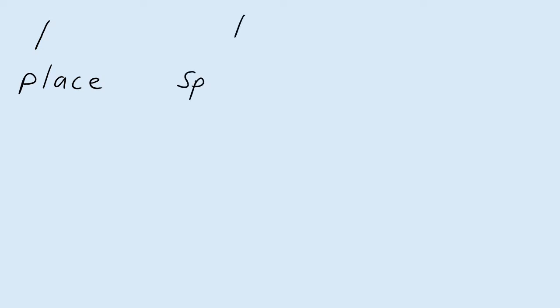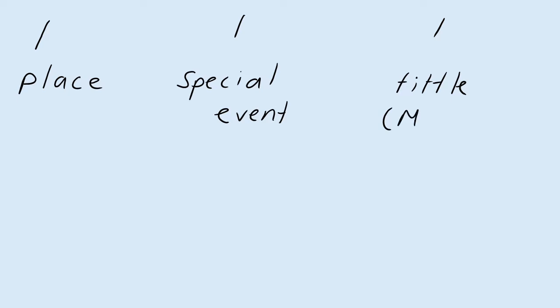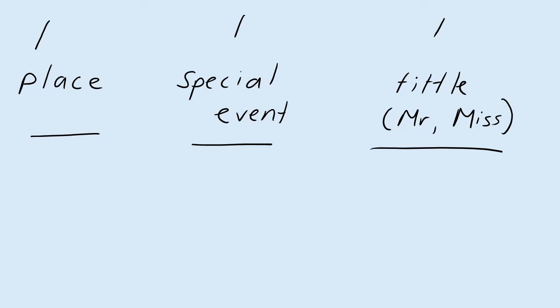Alright, let's go to the next slide. I'd like you to try your own sentence. Pick one place — geographical location — one special event, and one title, like Mr. or Miss. Include these three different types of capitalisation in one sentence. Pause this video and give it a go. Your teacher will see that when they have a look at your book, or you can take a photo of it and add it to See-Saw — show them a great example of how you're using capitalisation correctly.